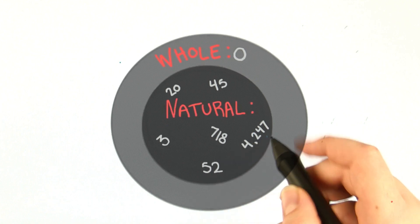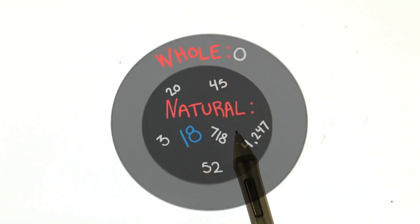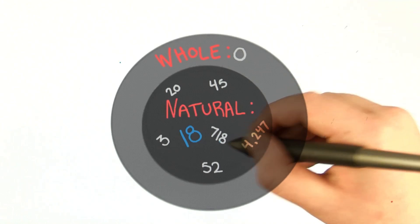then 18 is a natural number, so we can point here. But since that circle is inside of the whole number circle, we know that 18 is also a whole number.